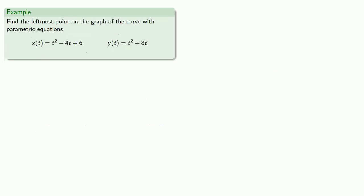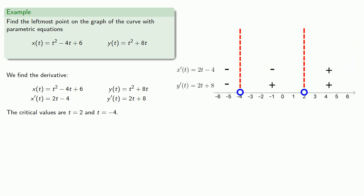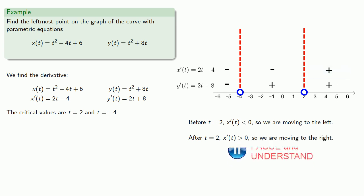How about extreme values? For example, let's find the leftmost point on the graph of the curve with the same parametric equations. If we're at a point on the curve and we can move to the left, we're not at the leftmost point. Fortunately, we've already found the derivatives and the critical values, which allowed us to find the signs of x prime and y prime. Before t equals 2, x prime of t is less than 0 so we're moving to the left, and after t equals 2, x prime of t is greater than 0 so we're moving to the right.